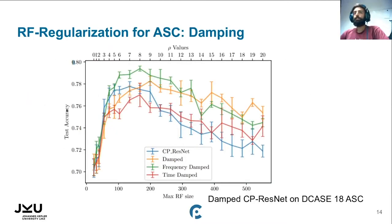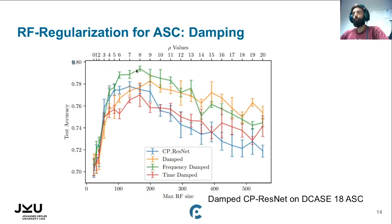Here we show the test accuracy of CP-ResNet on the DCASE 2018 acoustic scene classification dataset across maximum receptive field values. In green we see frequency-damped, in orange damped on both dimensions, blue is the CP-ResNet baseline, and red is time-damped. We can see that frequency damping in green outperforms the baseline. Furthermore, damping reduces the effect of increasing the Receptive Field on performance degradation — the performance degrades less when we use damping.